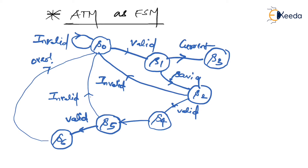Once you get your card and cash back, the machine automatically returns to S0 state, waiting for the next person or another transaction. This is how the finite state machine works. Before designing any digital machine or sequential logic circuit, engineers draw this state diagram, because knowing which state comes after which is essential to the design.